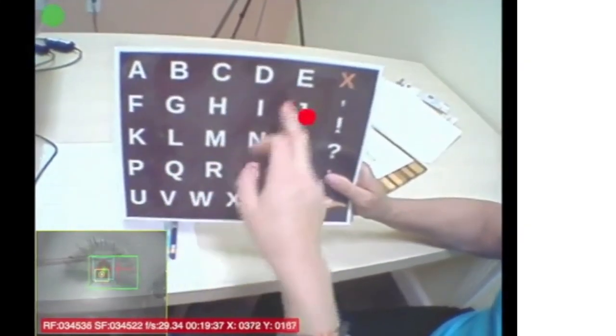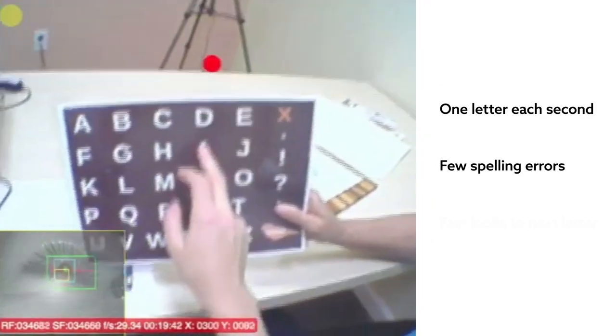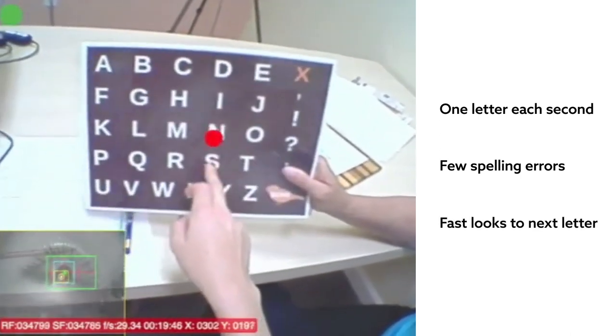Participants spelled quickly and accurately, pointing to about one letter every second, making only a few spelling errors, and looking at the next letter in the word about half a second after pointing to the previous letter.